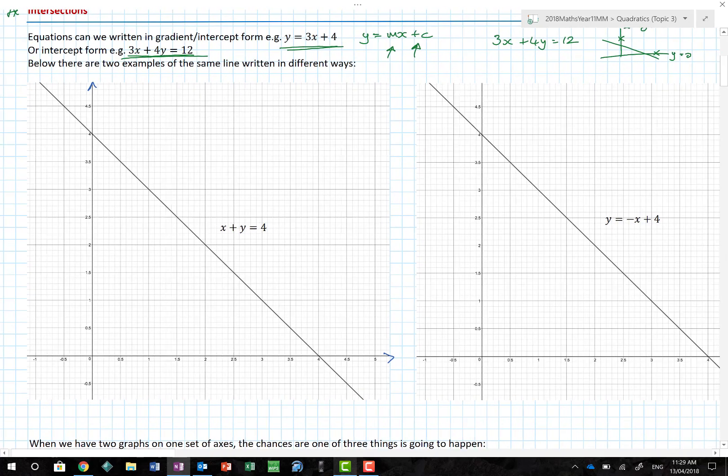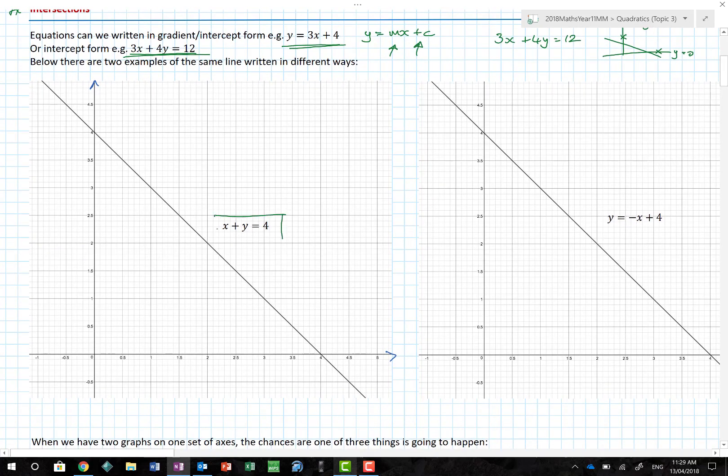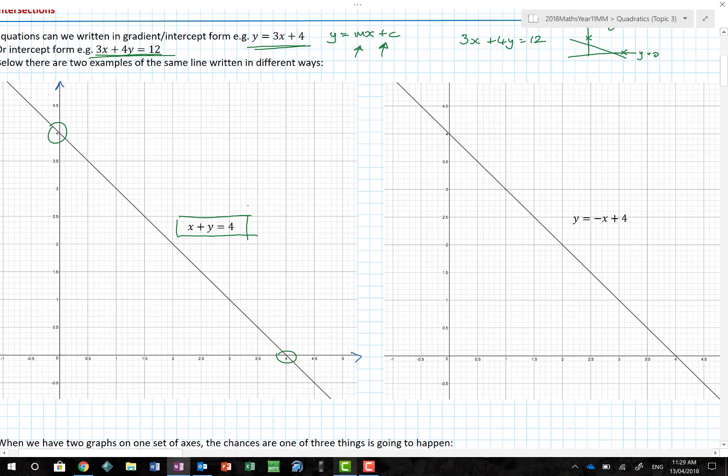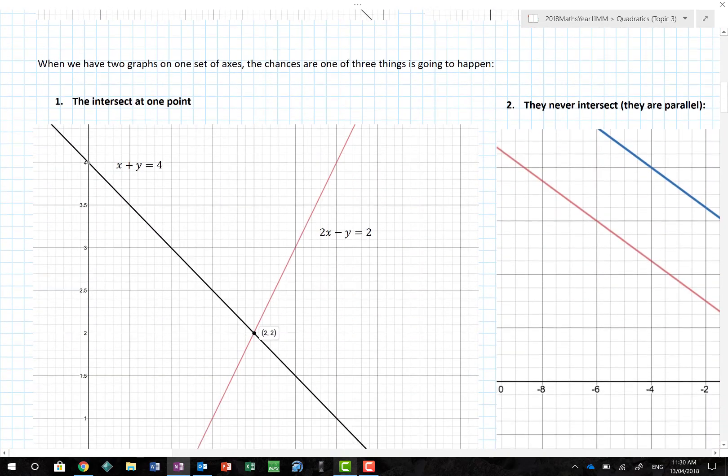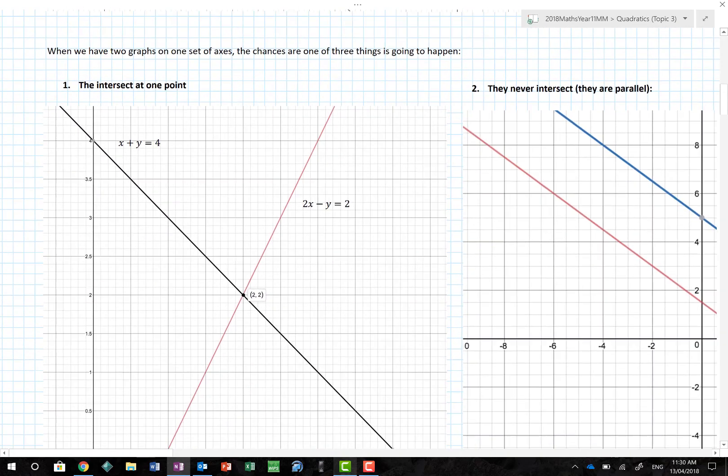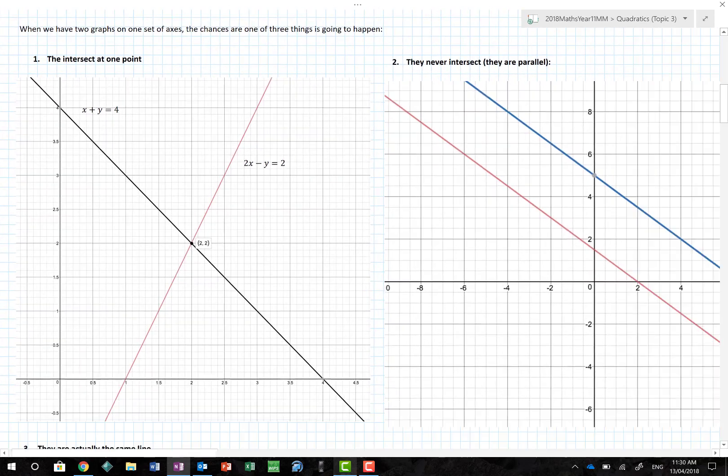Here is my equation x plus y equals 4. It crosses through 4 and crosses through 4 there. This is in intercept form and this is in gradient intercept form. Same equation. When we are then trying to solve simultaneous equations, there are three cases that we need to consider.